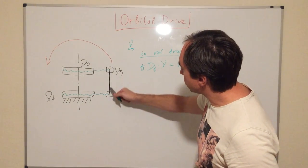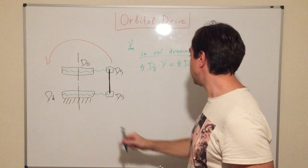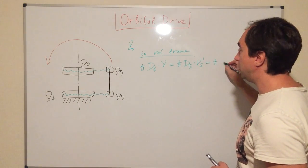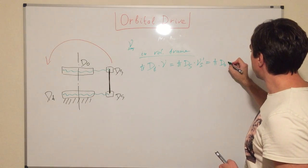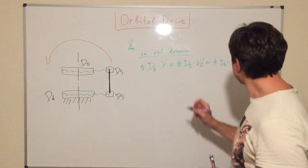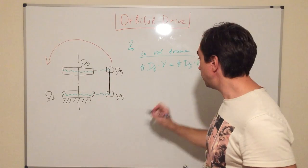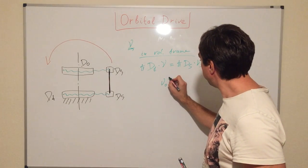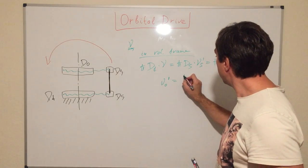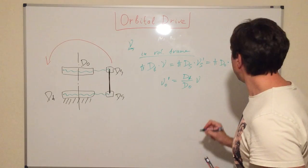And as these two pulleys are connected, this belt is going to have the same speed as this one. So, all this is going to be equal to π D_output times ν_output prime. And thus, the frequency of the rotation of the output pulley is going to be DF divided by D_output times ν.